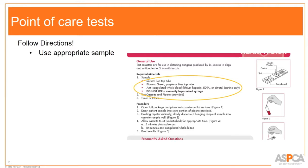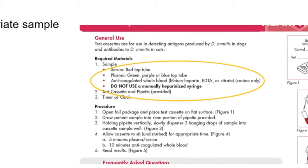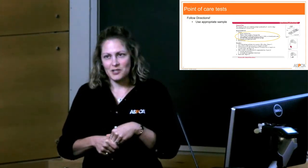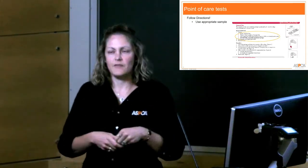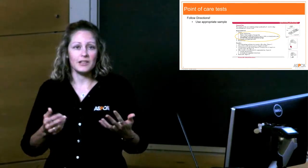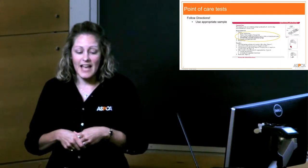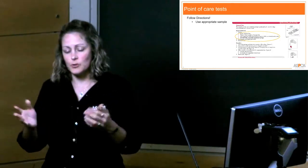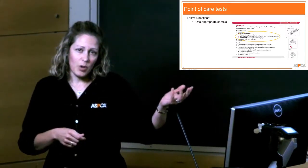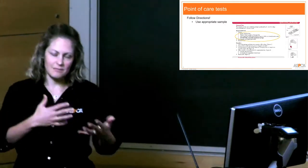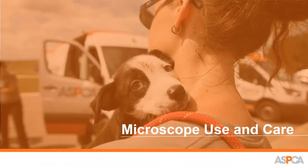Make sure you're using the appropriate sample. One test specifically says you can use serum, plasma, or anticoagulated whole blood, but do not use a manually heparinized syringe — yet many shelters do exactly that. Instead, draw your blood sample and put it in a purple top tube. That also gives you a backup sample if a test fails or doesn't run correctly, so you don't have to redraw blood.